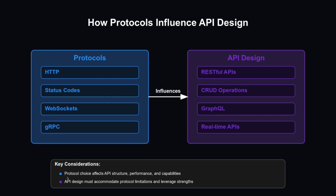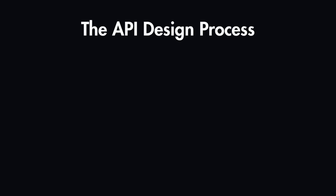Your protocol choice affects API structure, performance, and capabilities, so choose based on the strengths and limitations that best match your API type. The API design process starts with understanding requirements — identifying core use cases and user stories, and defining the scope and boundaries of what will be developed.